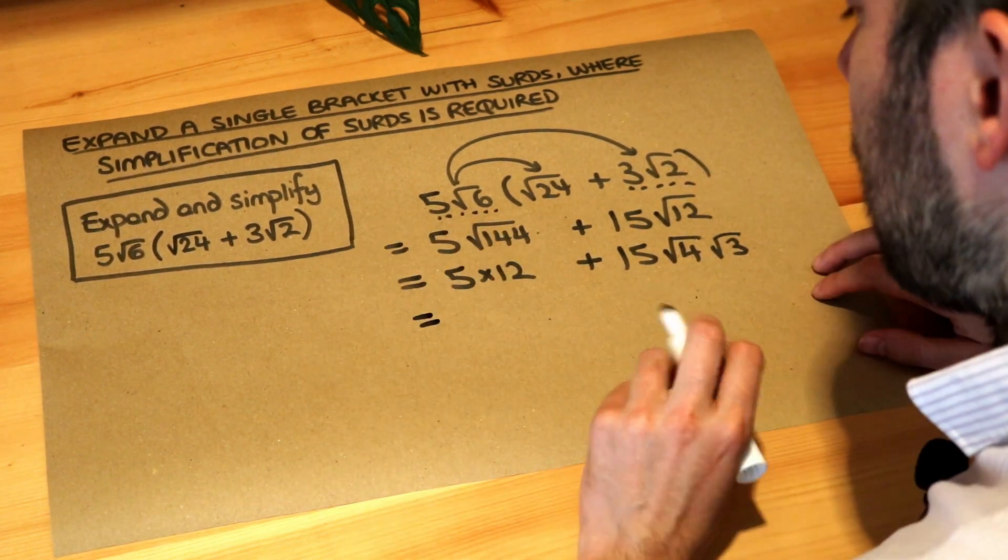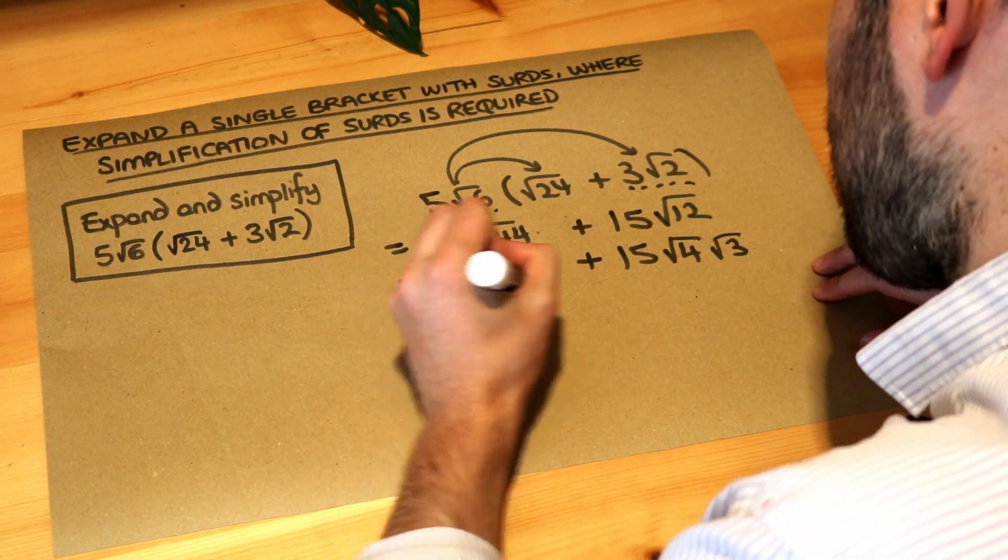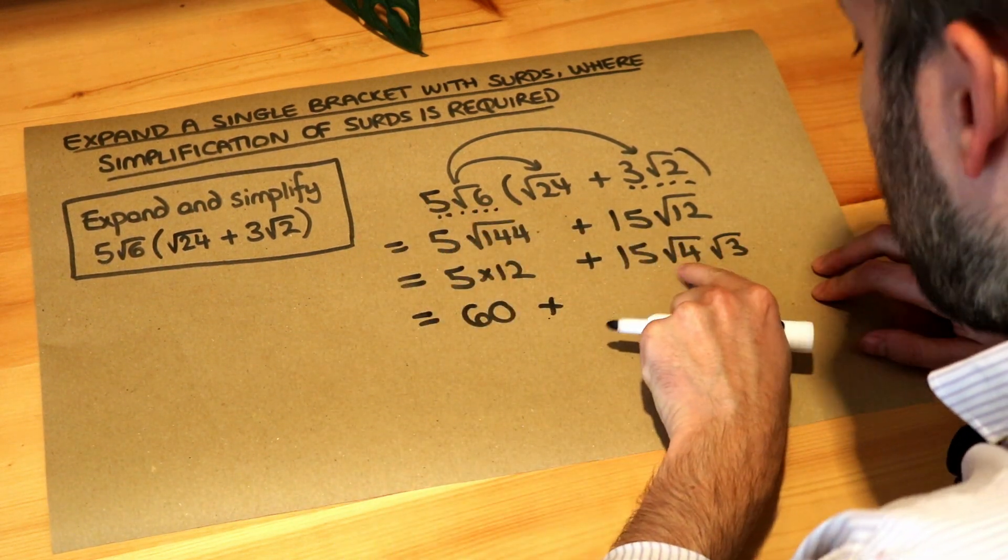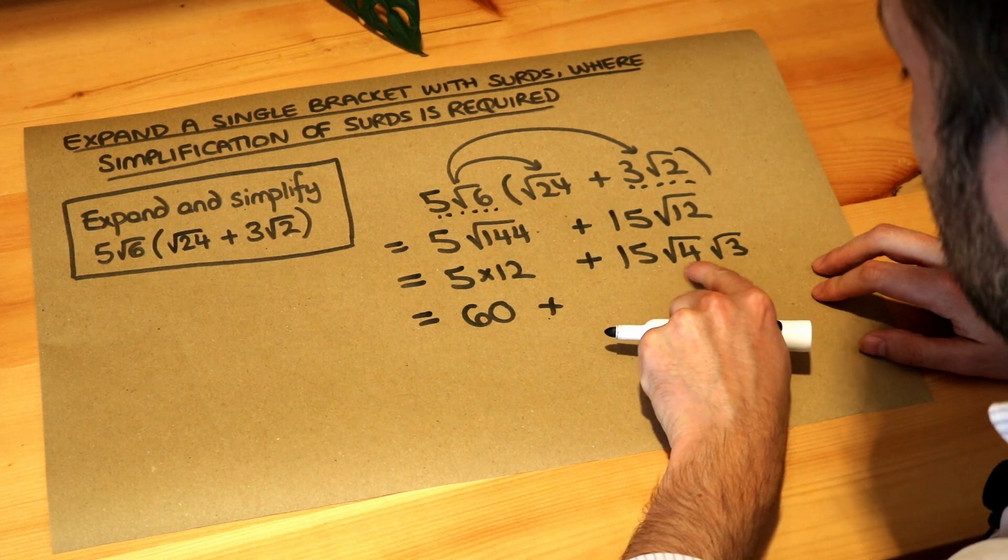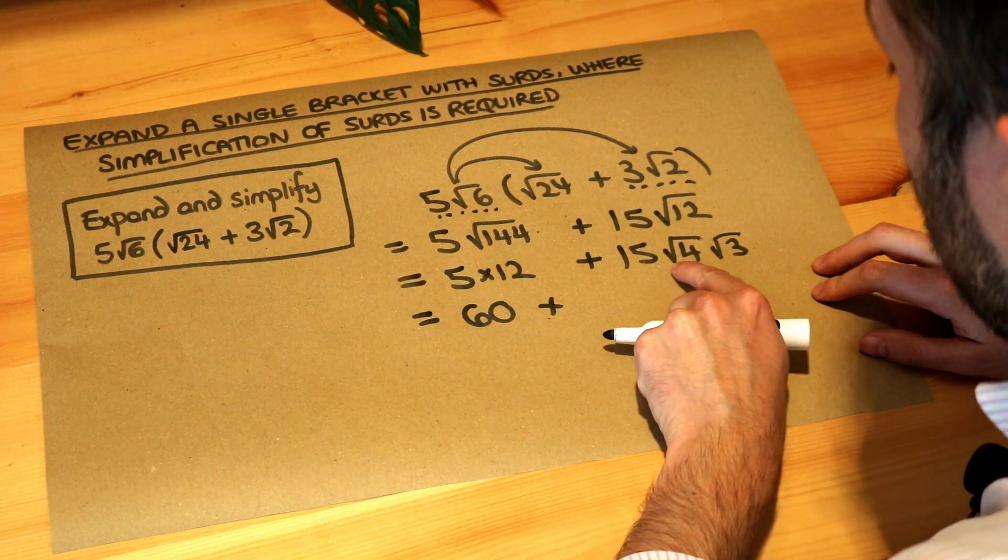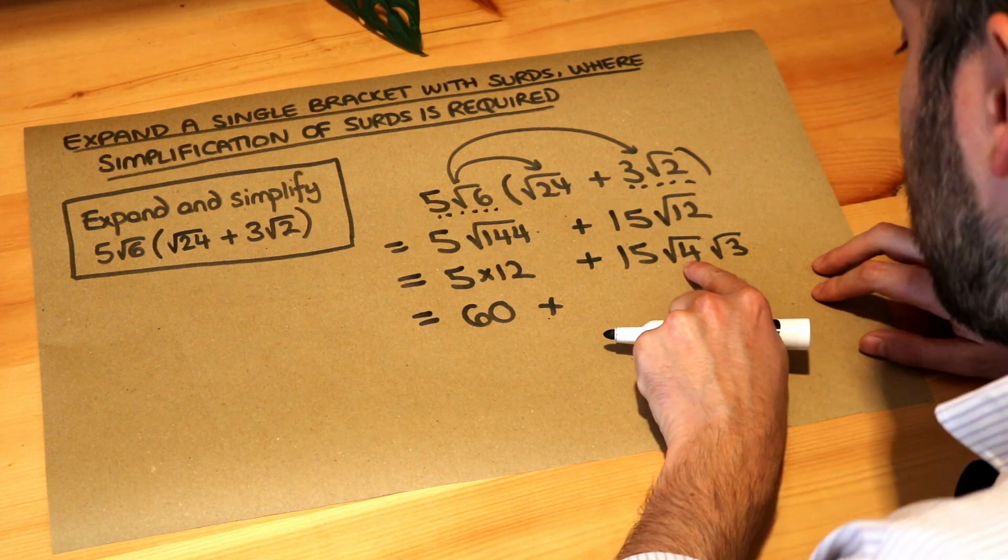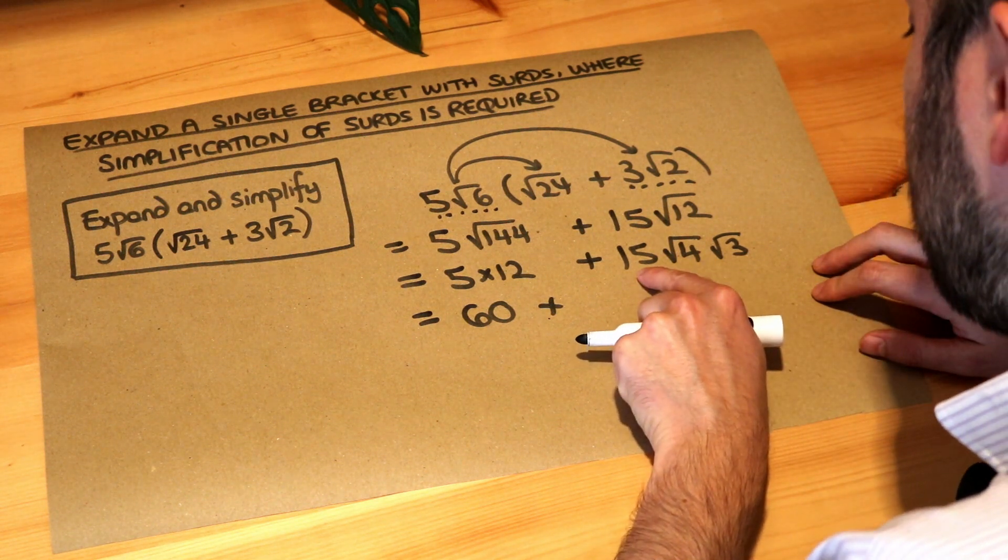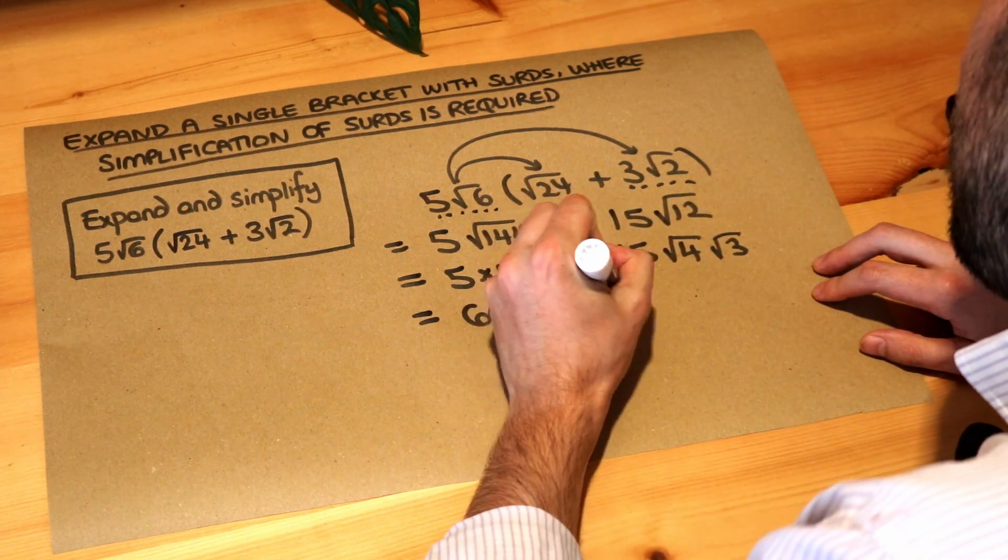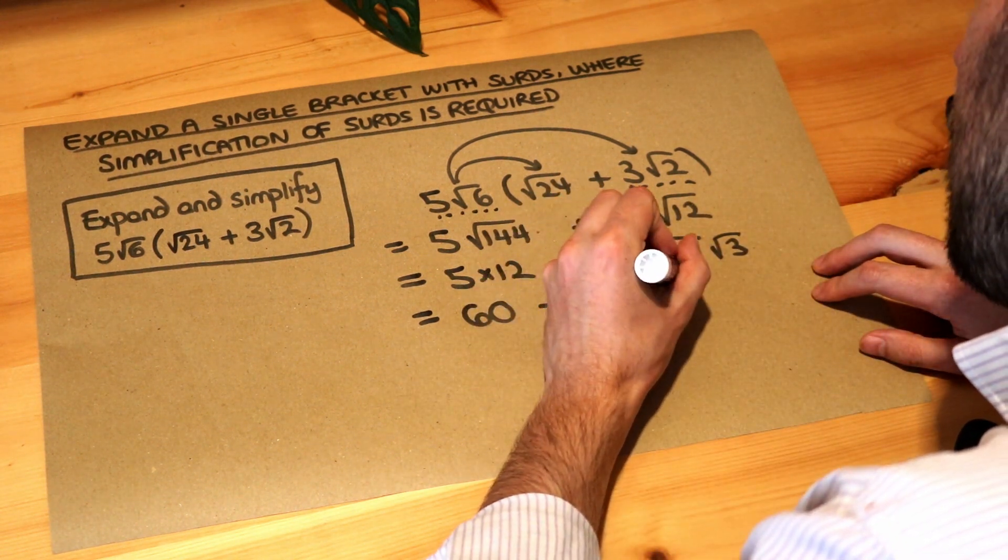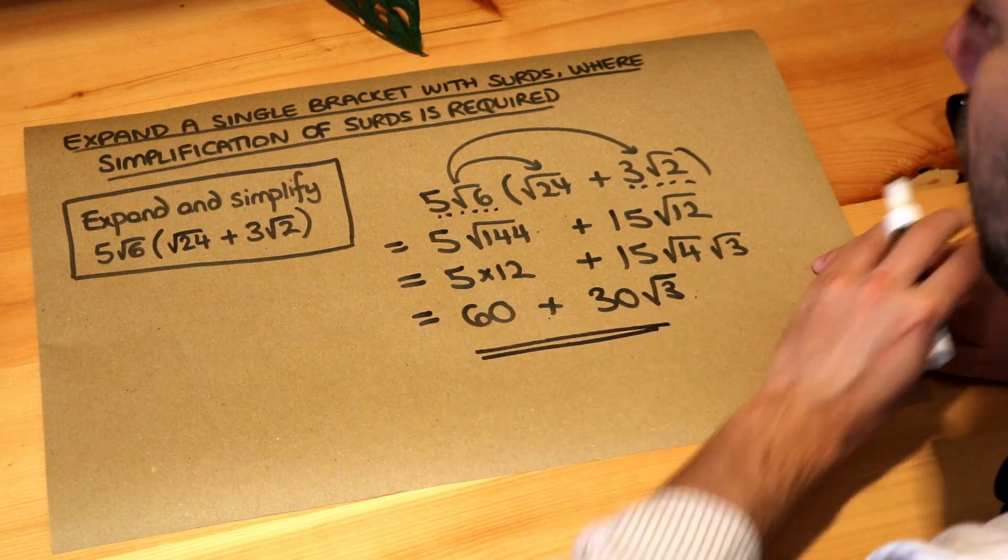Let's simplify further. 5 times 12 is 60, and then the square root of 4, because we took out a square number as a factor, we can simplify that. Root 4 is just 2, and 2 times 15 is 30, so it's 30 lots of root 3. We get 30 root 3, and that is the final answer.